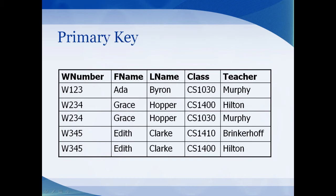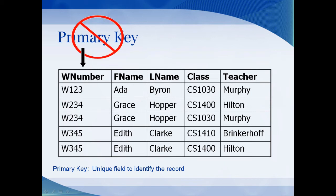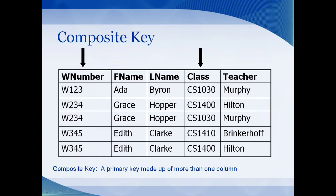We need to assign what's called a primary key. A primary key is just a field that uniquely identifies the row, record, or table. Here at Weber State, it's your W number. We can't use a simple W number in this case because Grace and Edith are listed in the table twice. So instead, we're going to use what's called a composite key — that's when you have more than one field that identifies the record; in this case, the W number and the class.